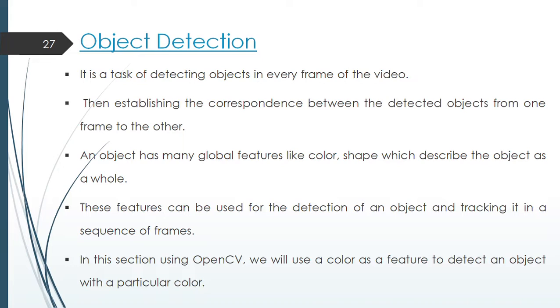Object detection. Here our task was to detect a particular object and track it by establishing correspondence between the detected object from one frame to another. An object has many global features like color, shape which describe the image object as a whole. These features can be used for detection of an object and tracking it in a sequence of frames. We used color as a feature to detect object because this will help us detecting an enemy if we know the color of their uniform.